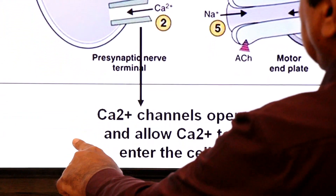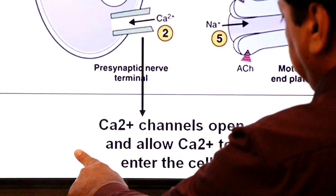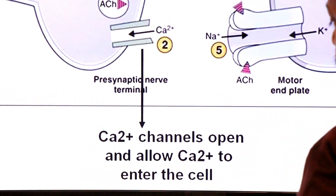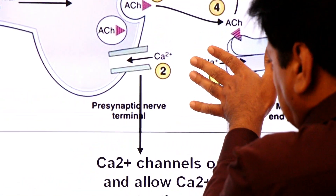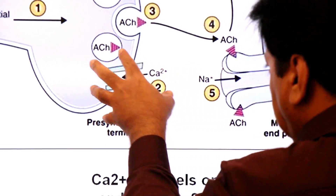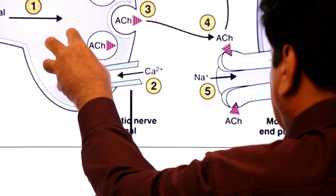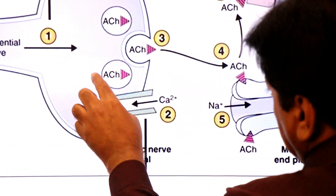Step 2: calcium channels open, allowing the calcium ions to enter into the cell. The calcium ions cross from the extracellular solution into the intracellular solution.